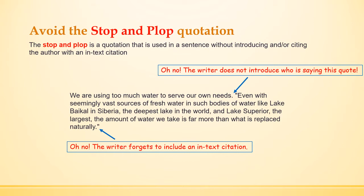The other, more serious reason why the stop and plop is not a good idea is that even though you are putting quotation marks around somebody else's ideas, you're not properly citing it or giving credit where credit is due. That actually falls in the category of accidental plagiarism. The arrows on the screen show that the writer did not introduce who was saying the quote, so we don't know who's talking. And at the end, the writer forgets to include the in-text citation.